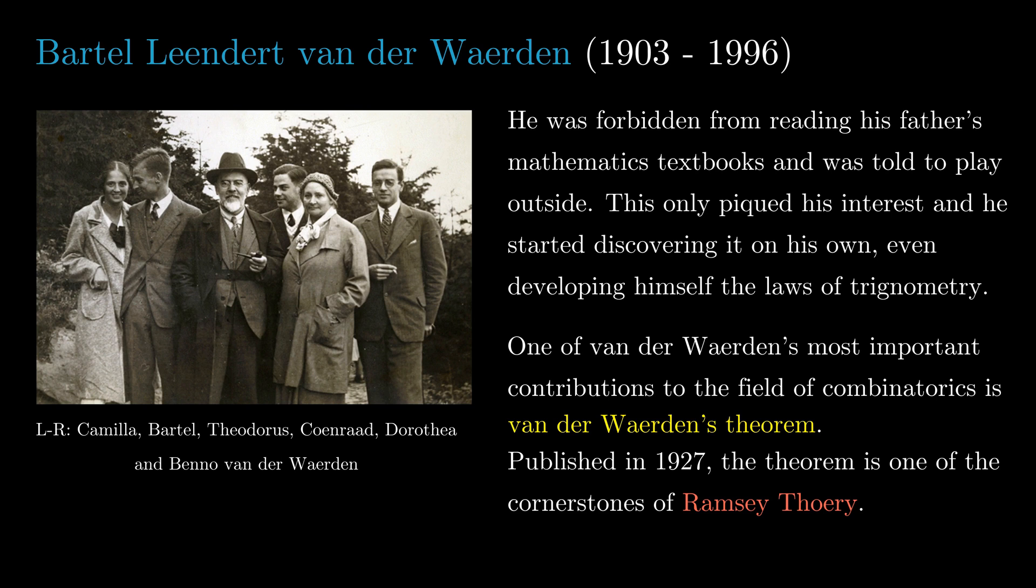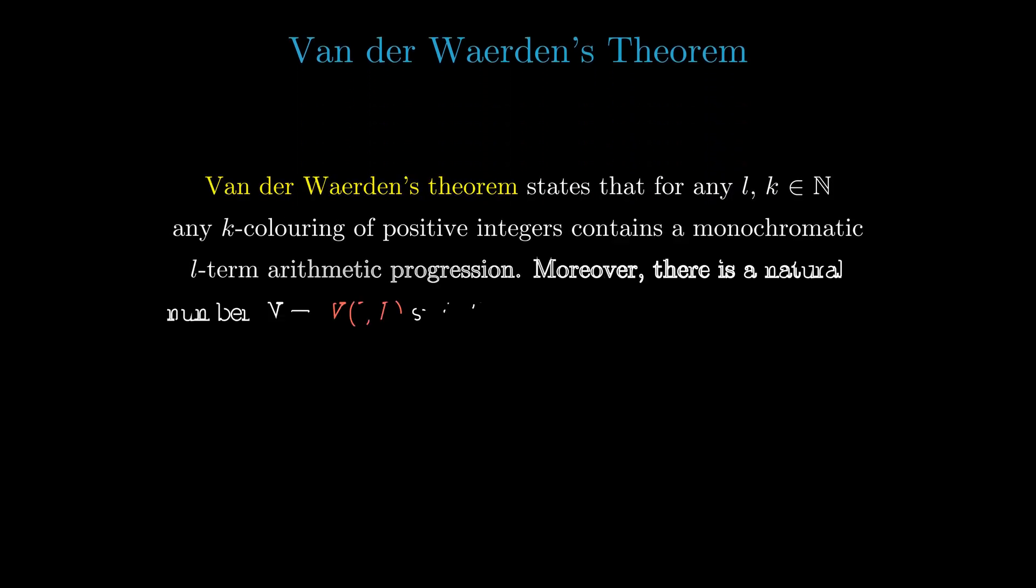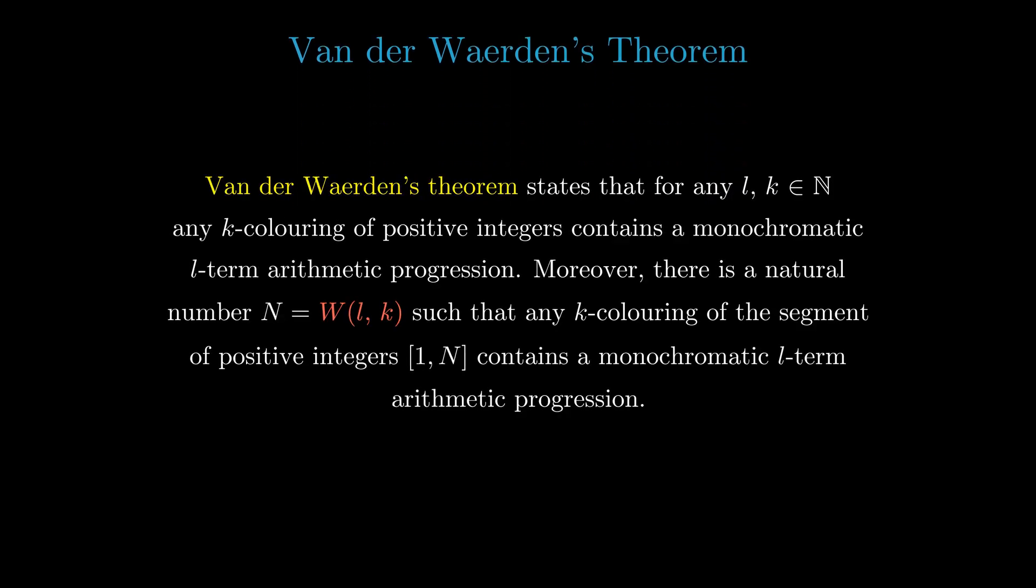One of his most important contributions to the field of combinatorics is van der Waerden's theorem. This theorem states that for any l, k ∈ ℕ, any k-coloring of positive integers contains a monochromatic l-term arithmetic progression.